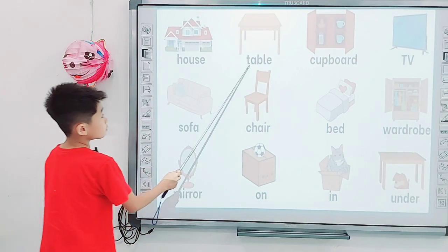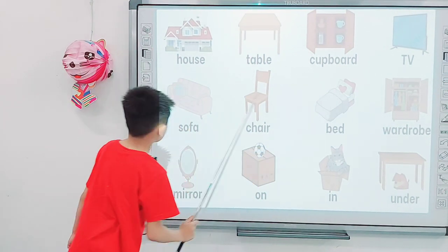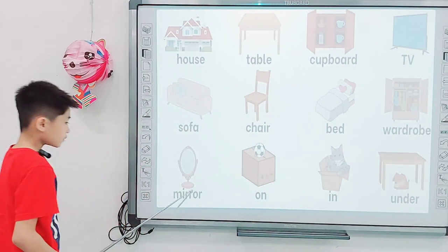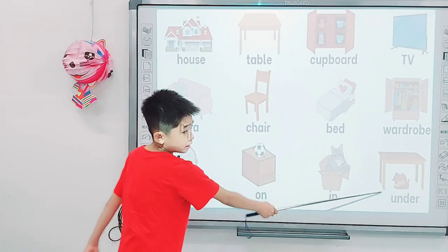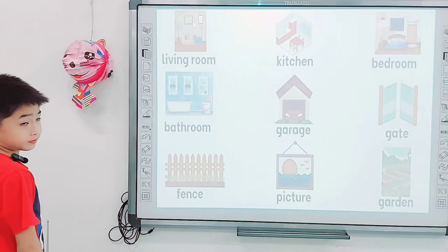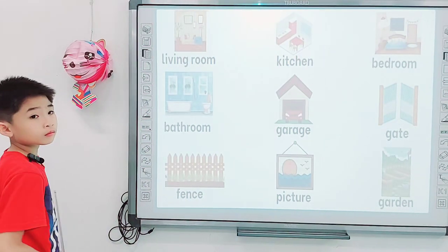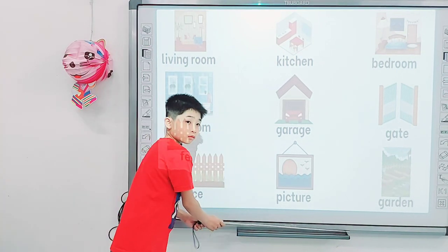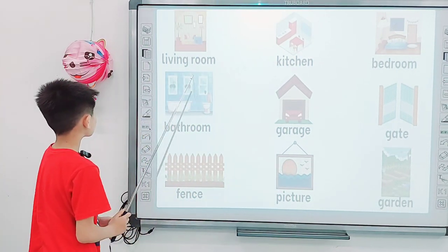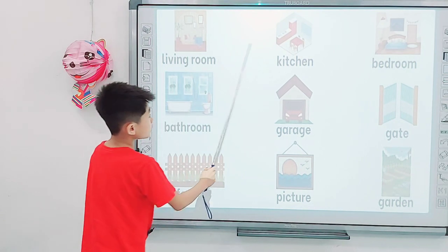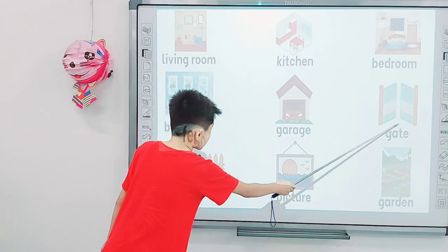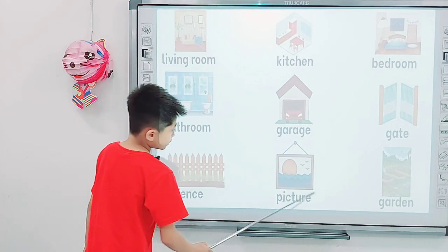Next one. Howl, table, carpet, sofa, chair, bed, wardrobe, mirror, on, in, under. And what are those? Living room, kitchen, bedroom, garage, desk, fan, picture, garden.